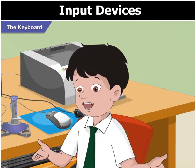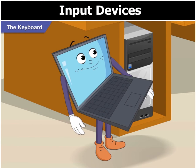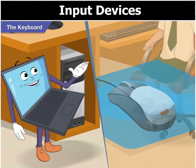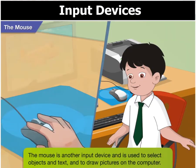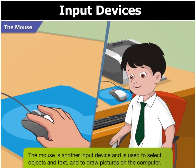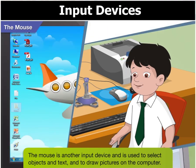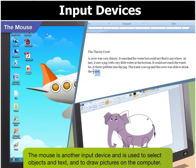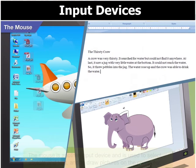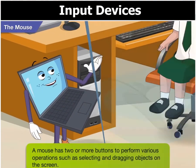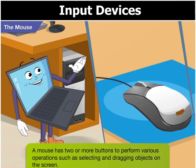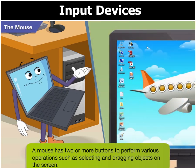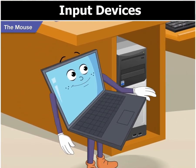Yes Toggle, I know. Very good Goggle, you remember the uses of a mouse as well. Yes, a mouse is another input device and we use it to select objects and text and to draw pictures on the computer. Right Goggle, you will notice that a mouse has two or more buttons. You use these buttons to perform operations such as selecting and dragging objects on the screen.